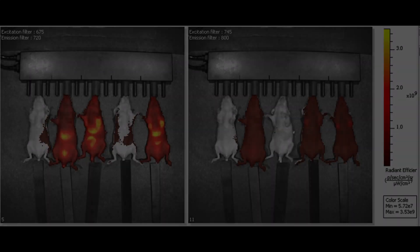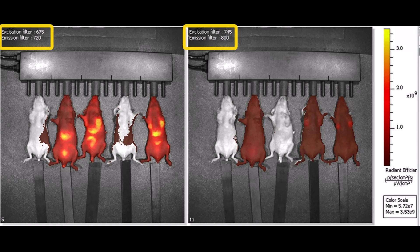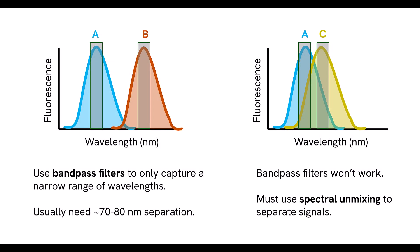We also demonstrated how to set up fluorescence experiments using the imaging wizard, how to image two probes in the same animal using different excitation and emission filter pairs for each probe, and how to check for crosstalk between the imaging channels.